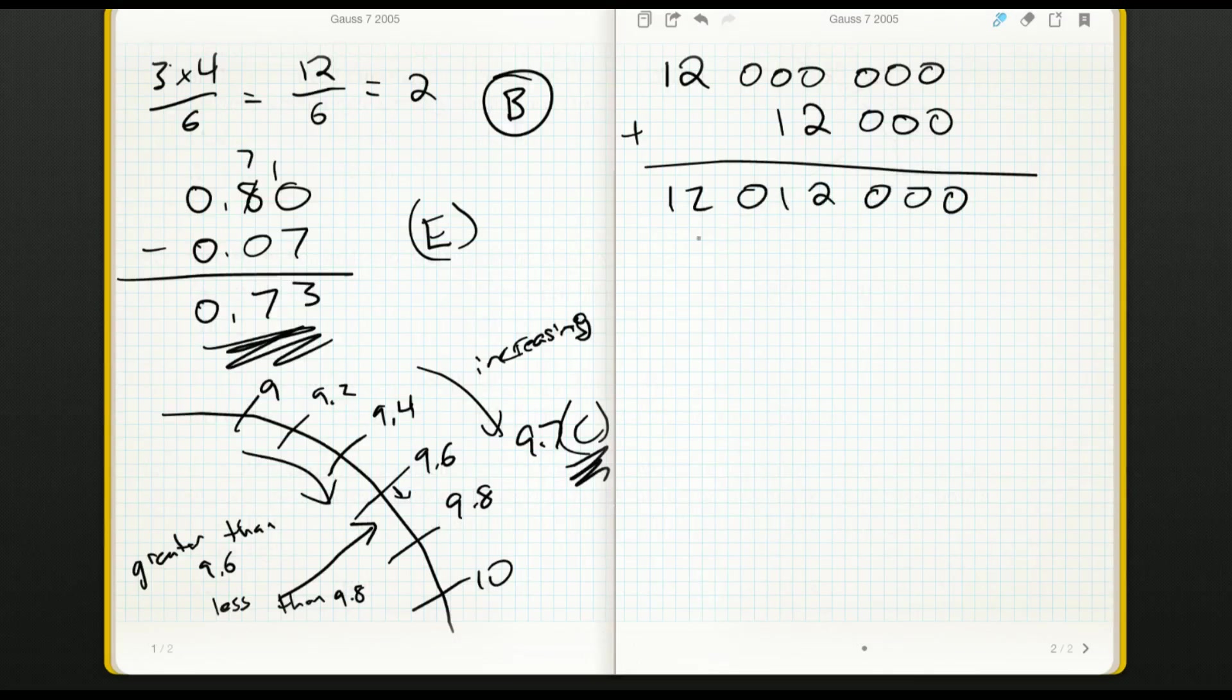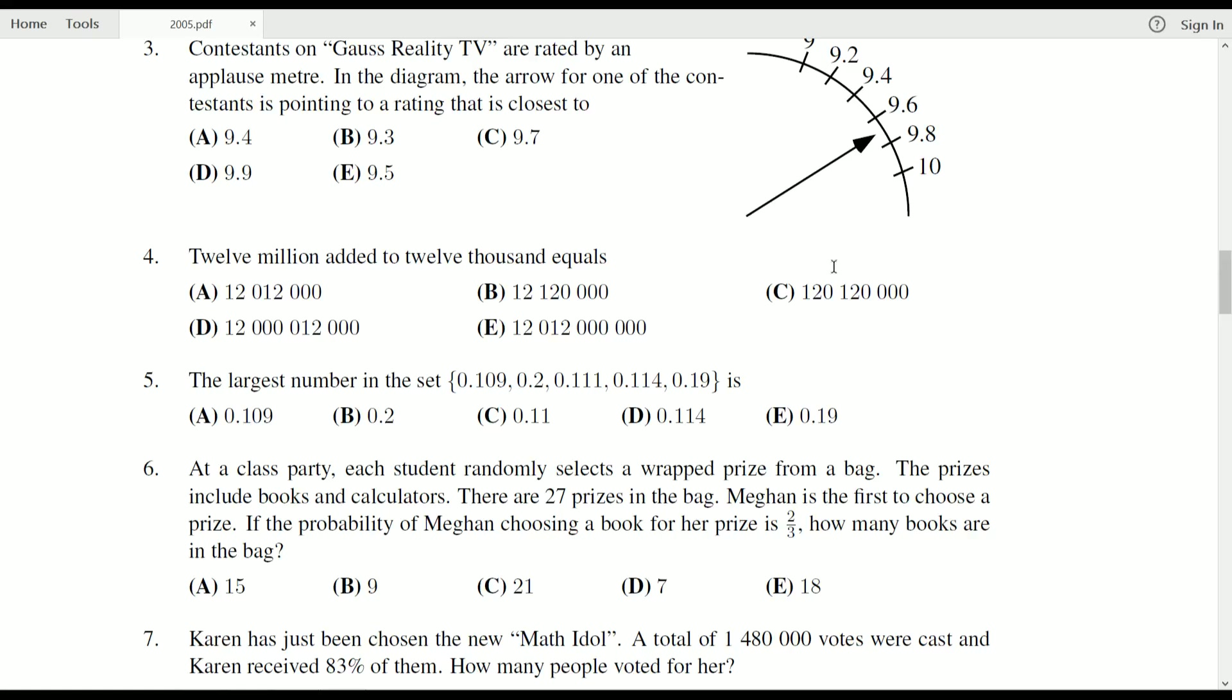And we're looking for twelve zero twelve thousand, so twelve million twelve thousand. And if we take a look here, that is going to be A.